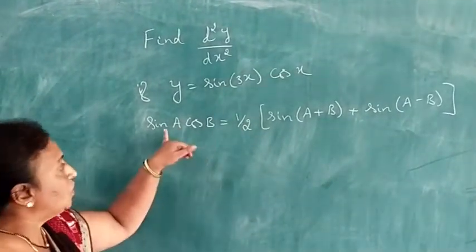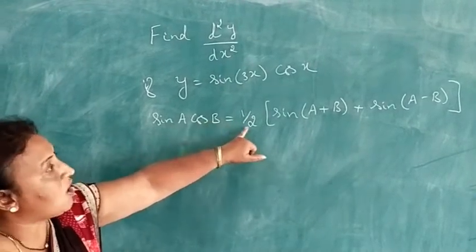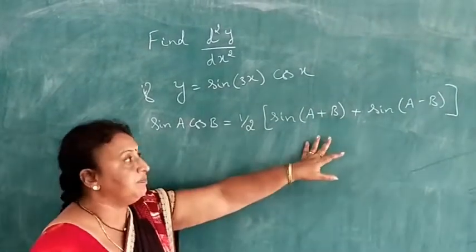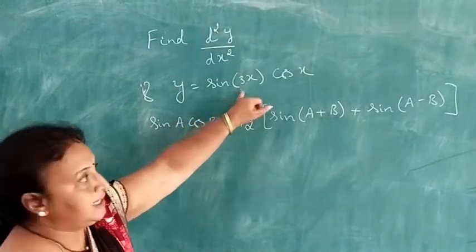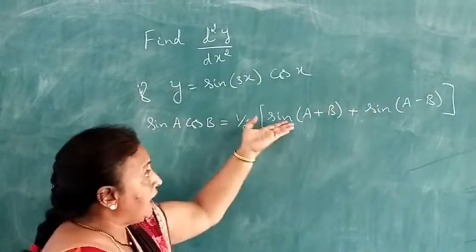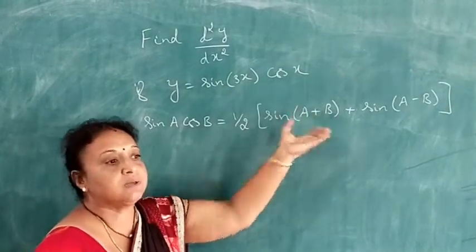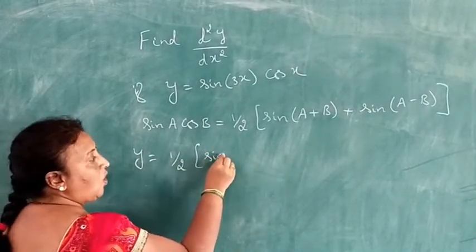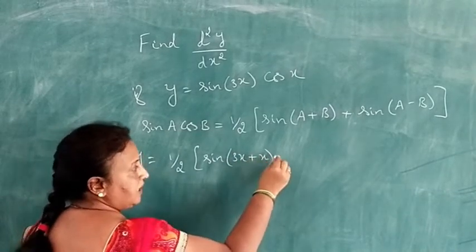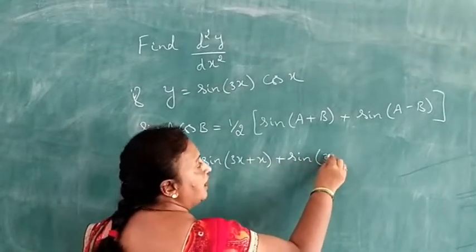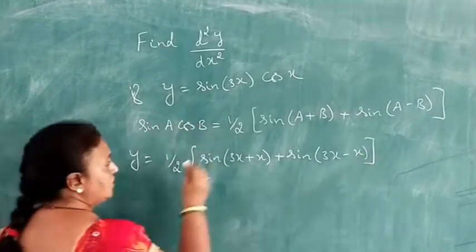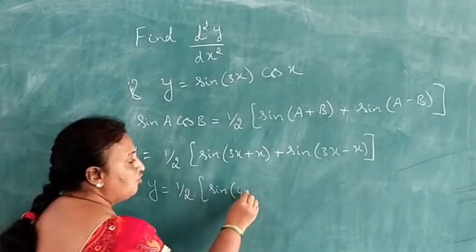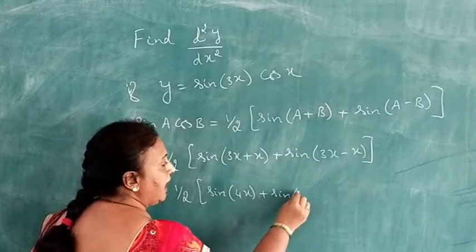Substituting A equals 3x and B equals x into the formula, y equals half into sin(3x + x) plus sin(3x − x). Simplifying, y equals half into sin 4x plus sin 2x.